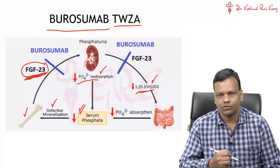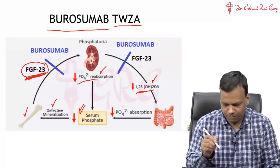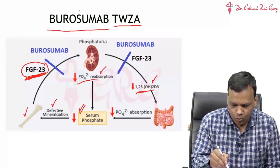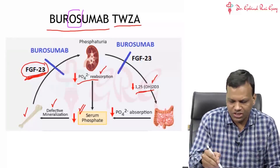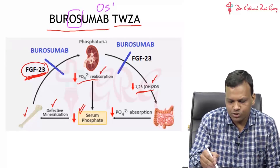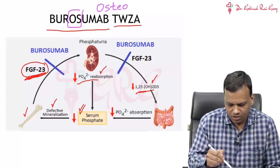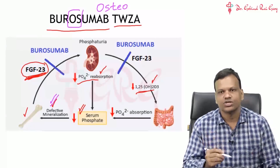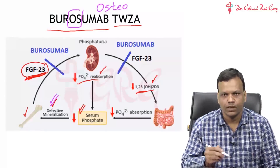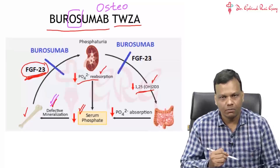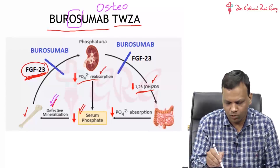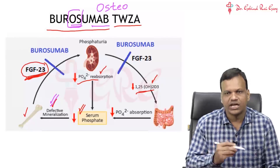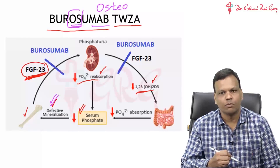Coming to the same question: how to remember? You can remember that the name Burosumab contains 'OS'. OS means osteo, and osteo means bone. So Burosumab is used for a bone problem — defective mineralization. This is not a personal mnemonic; it is actually the nomenclature. The nomenclature states that if a monoclonal antibody contains 'OS' in the name, it will be for osteo, meaning for bone.